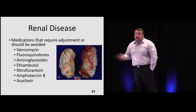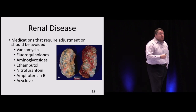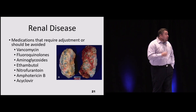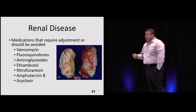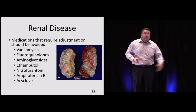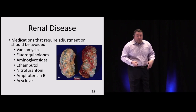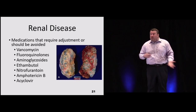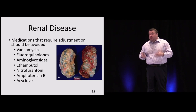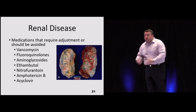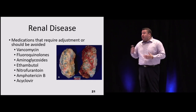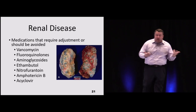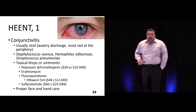In renal disease, dose adjustments are critical. Vancomycin is often started at 1g in the ED but should ideally be weight-based, then adjusted by renal function — GFR, peaks, and troughs — to avoid toxicity. Quinolones and aminoglycosides like gentamicin and amikacin are major renal hitters; limit aminoglycosides to three to five days if possible and maintain hydration. If a recently admitted patient returns with acute kidney injury, you must choose a different antibiotic.